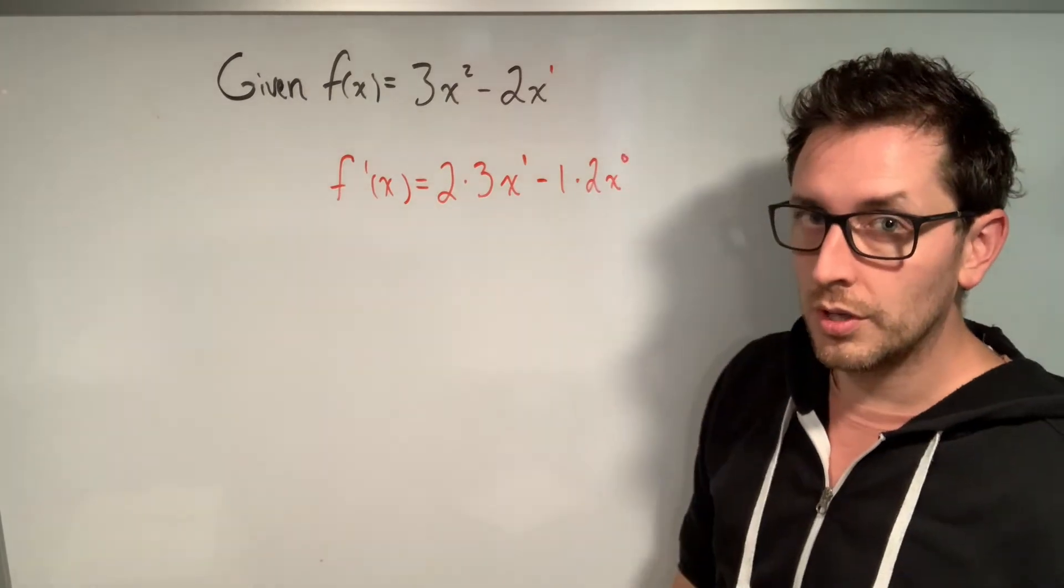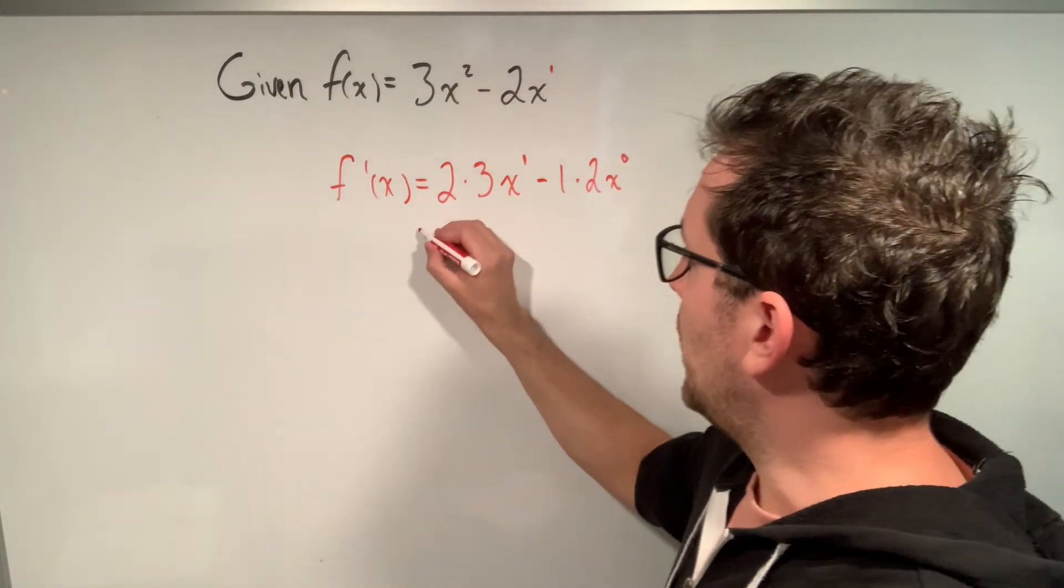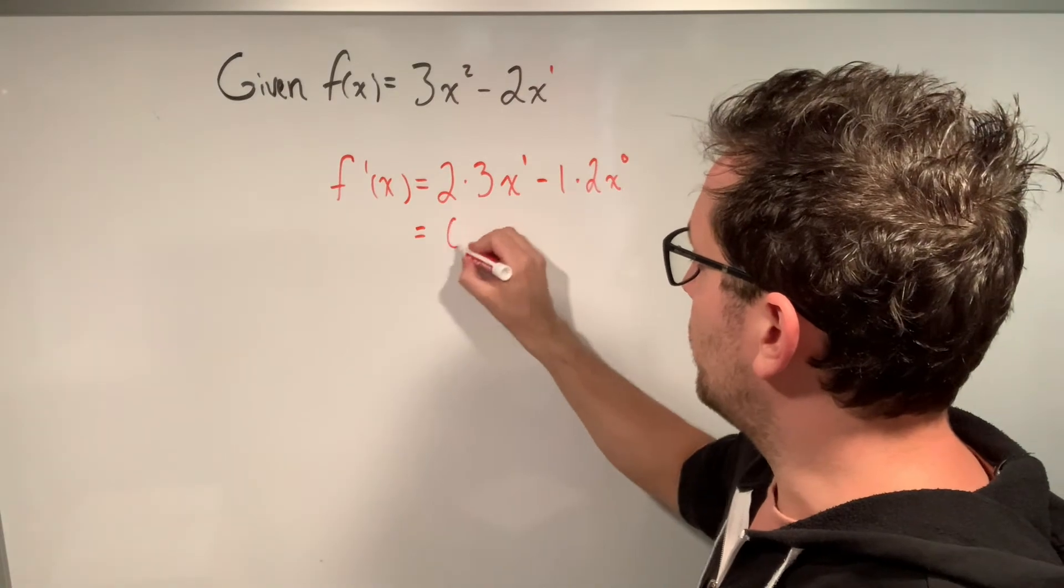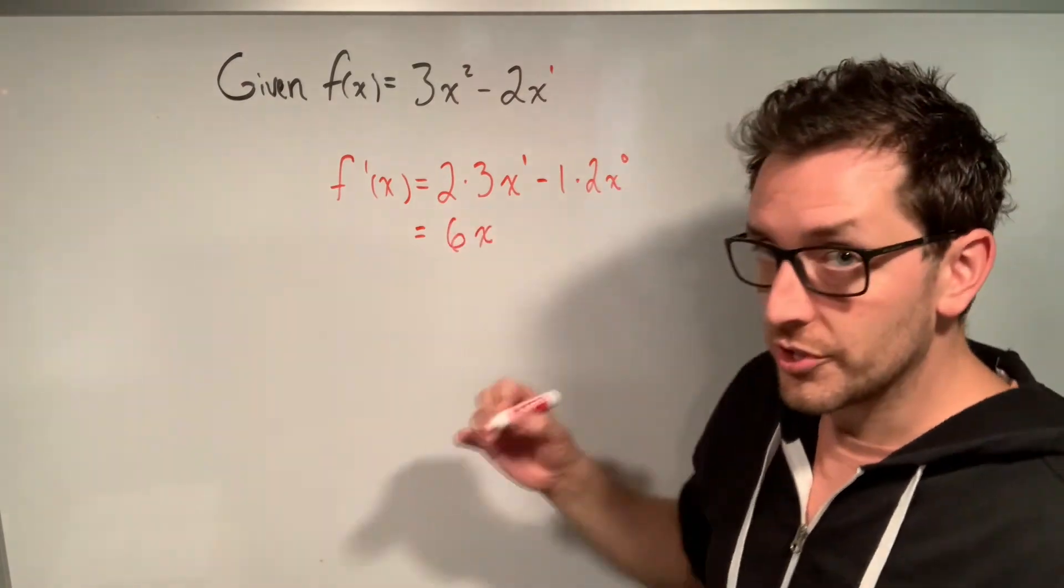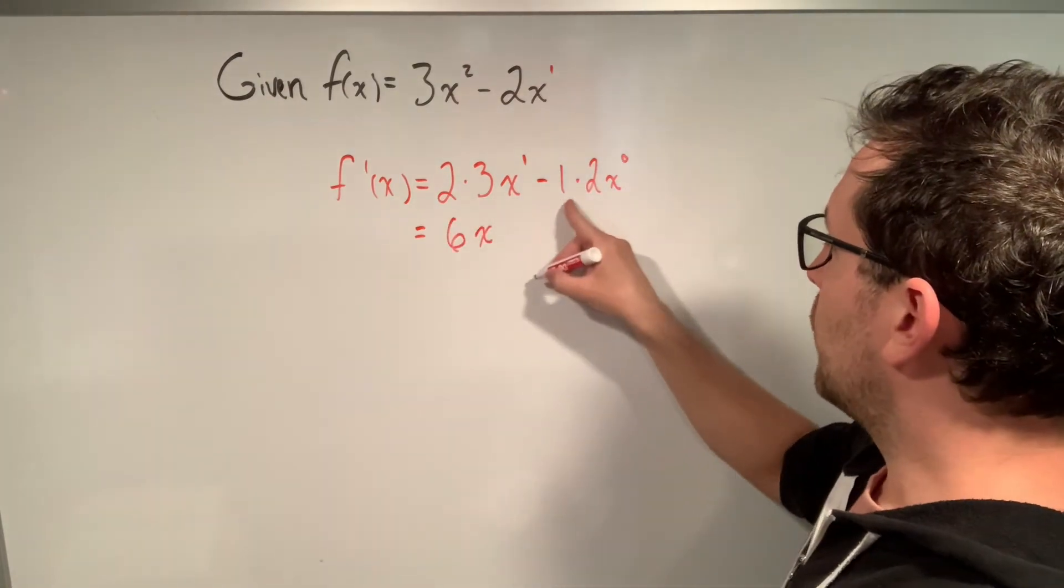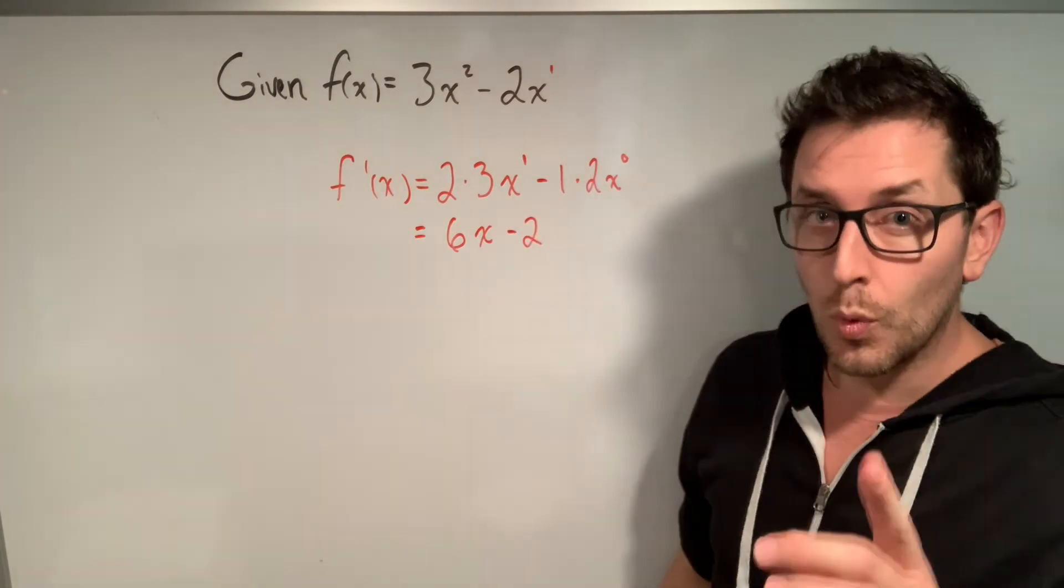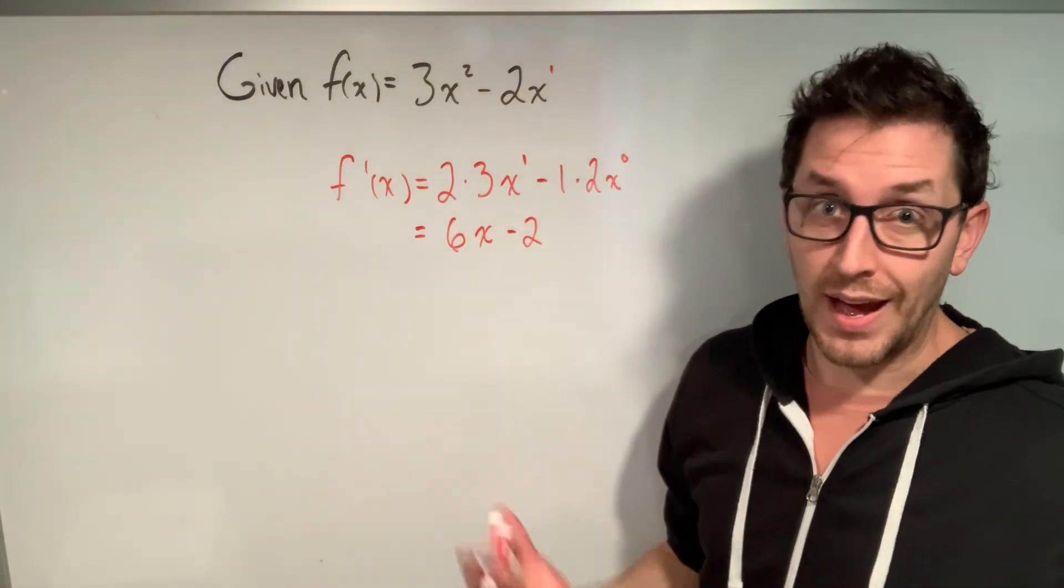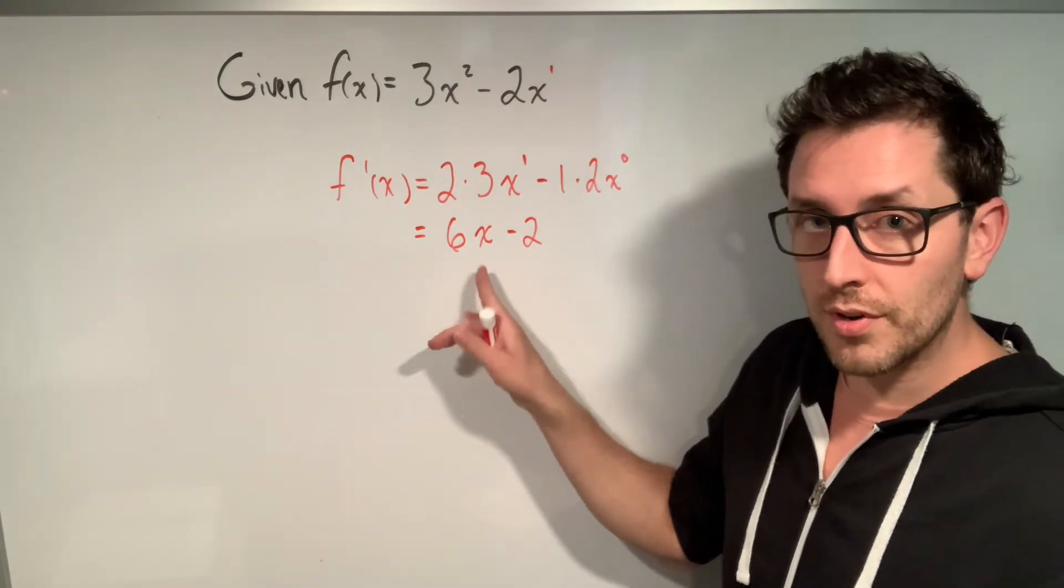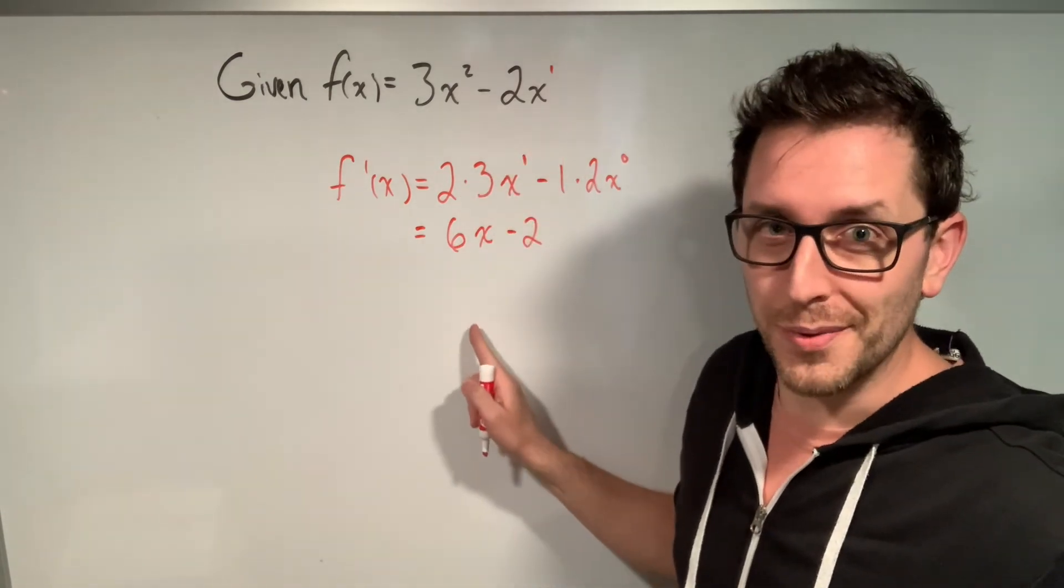We then clean all this up by saying, well, 2 times 3, that's just 6. x to the power of 1 is just x, and -1 times 2 is -2. x to the power of 0 is just 1. So after all of, what, 5 seconds, we found the derivative of this polynomial function without using first principles. What is this black math magic? Will it work every time? Am I allowed to use it on tests?